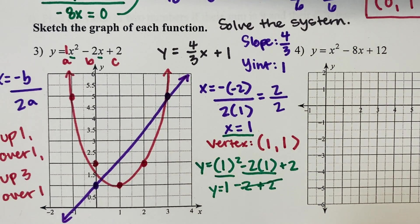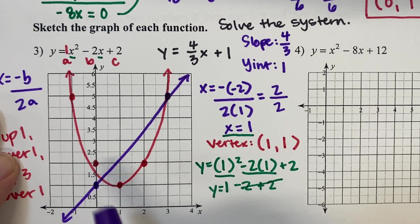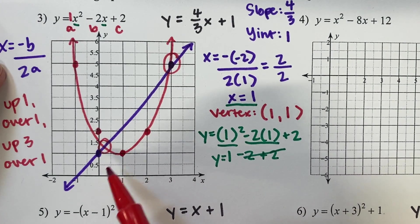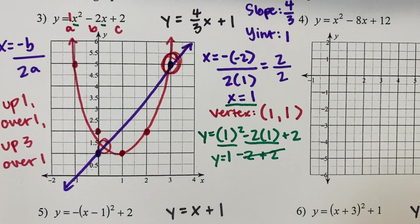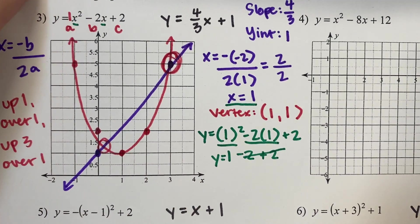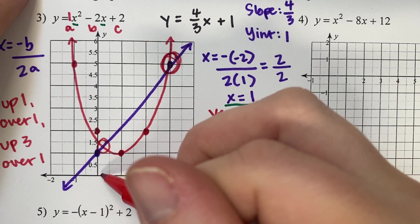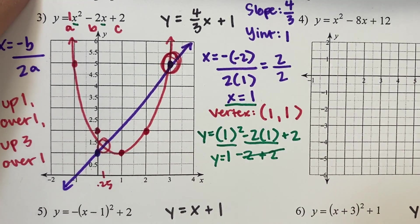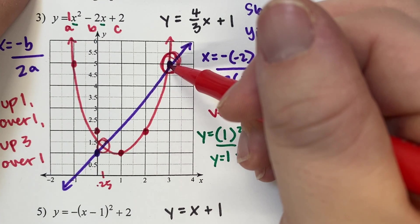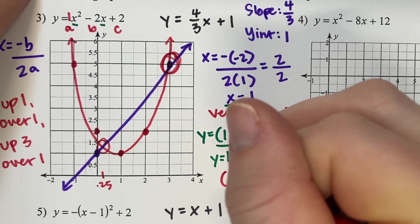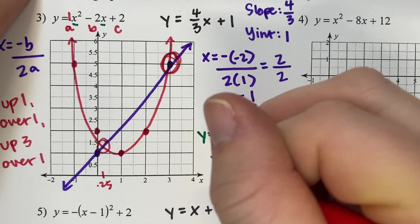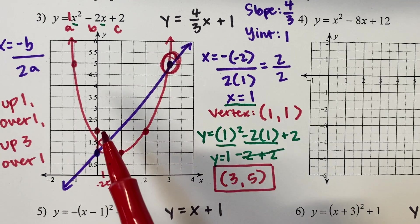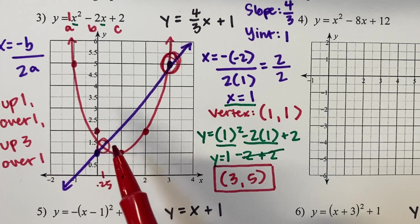These two graphs intersect in two places. We can't easily identify one of the intersection points — it's approximately 0.25, 1.25 — but the other one lines up clearly with x equals 3 and y equals 5 on our axes. So we write our solution as the coordinate point 3, 5. Remember, they do always have two solutions, but we focus on the one we can explicitly and easily identify.